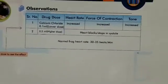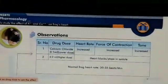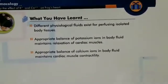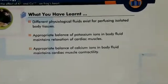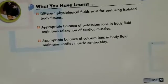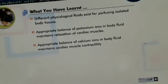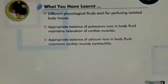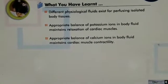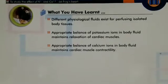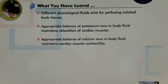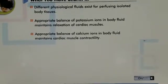Different physiological fluids exist for perfusing isolated body tissues. An appropriate balance of potassium ions in body fluid maintains relaxation of cardiac muscles, while an appropriate balance of calcium ions maintains cardiac muscle contractility. All ions are necessary — the concentration of both ions must be appropriate. Potassium helps for relaxation and calcium helps for contraction, and therefore the normal activity of the cell is maintained.